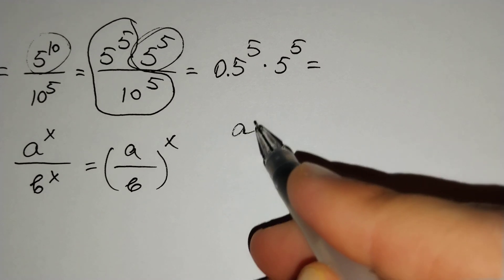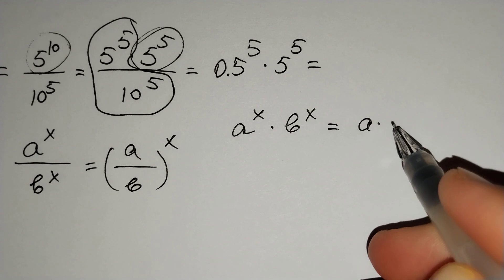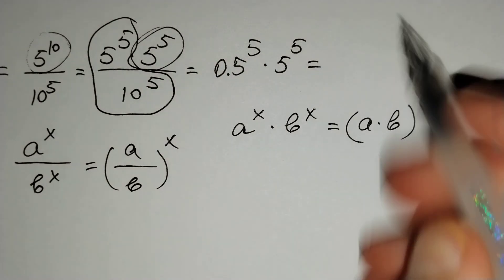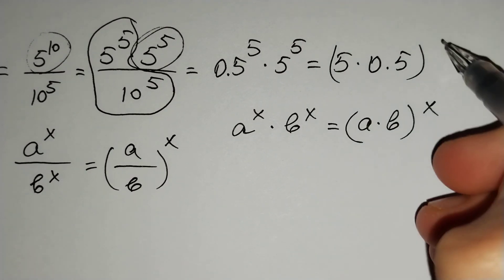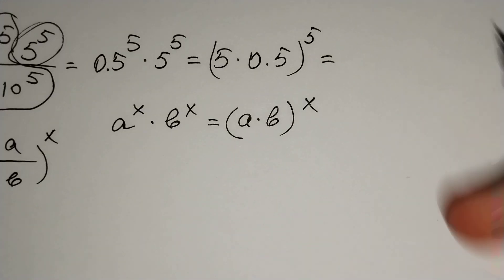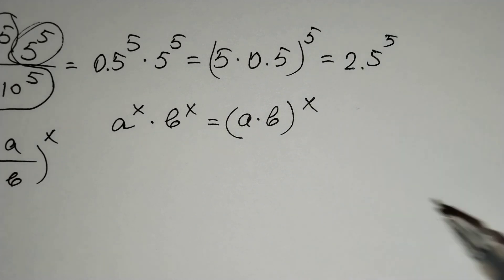And here a to the power x times b to the power x equals to a times b to the power x. For this formula, this is equal to 5 times 0.5 in brackets to the power 5, and it does 2.5 to the power 5.